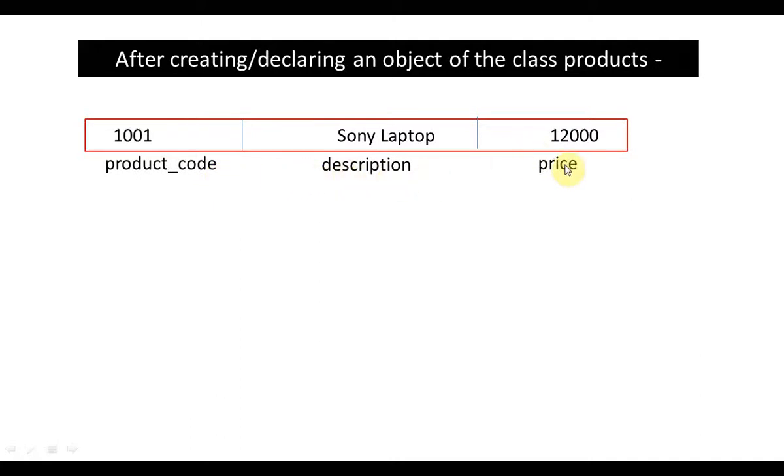So this product_code, description, price, they can also be called instance variables. Now this whole thing is an object. And the values that I have shown - 1001, Sony Laptop, 12000 - I have assumed that there are some values into this object.